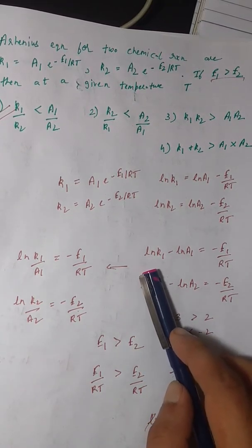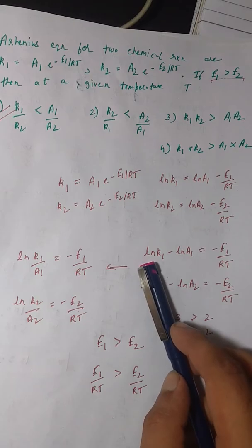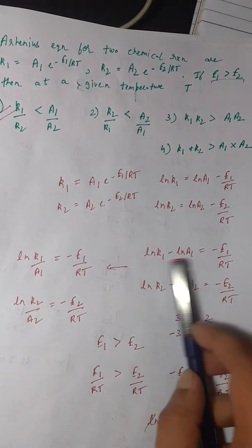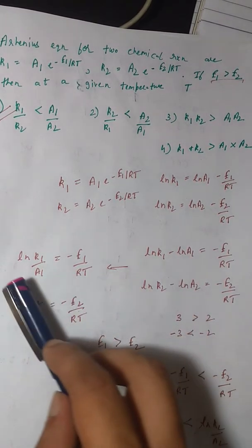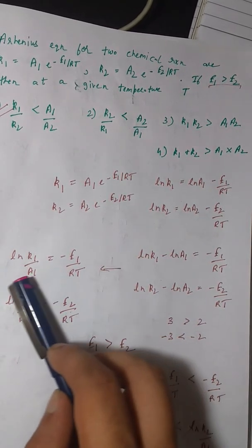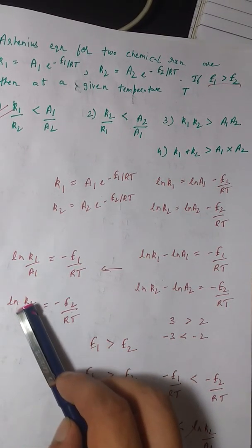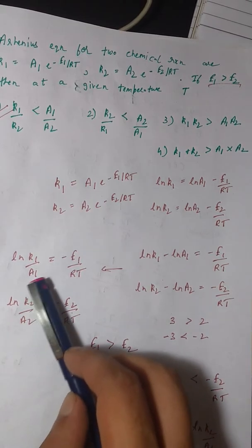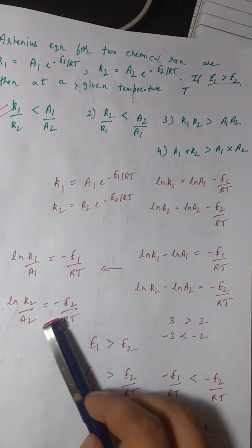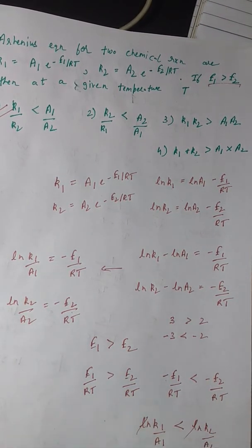This is a property of log that if two logs are being subtracted then you can write it in this form. So ln k1 - ln A1 can be written as ln(k1/A1). Similarly ln(k2/A2) = -E1/RT and this equals -E2/RT.